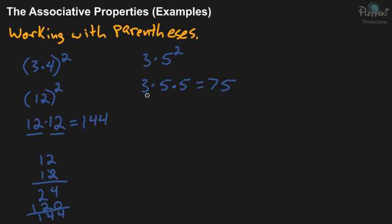With the rule in multiplication, it doesn't matter which order you multiply in. You could do 3 times 5 first to get 15, then multiply by 5 to get 75. I like to multiply 5 times 5 first because 25 is really easy to multiply by 3. The answer is 75.